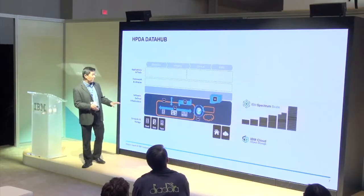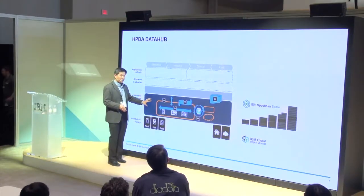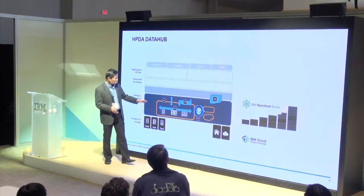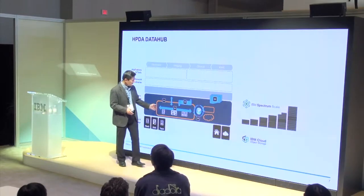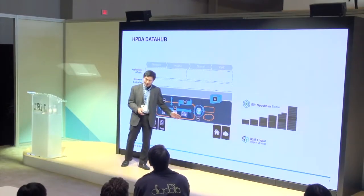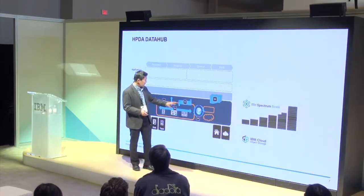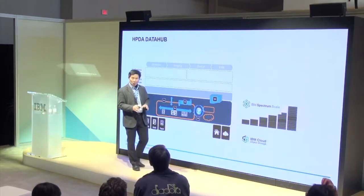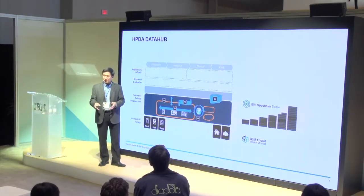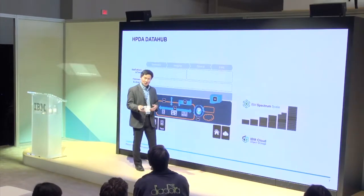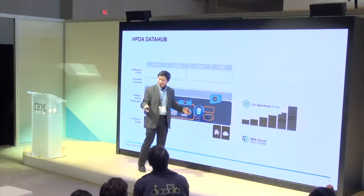This is the data hub — the blue layer — where we can land data very fast, tier the data to low cost, as Chuck talked about, and provide access to the data whichever way you want: NFS, CIFS protocol, Hadoop, big data, or object storage.